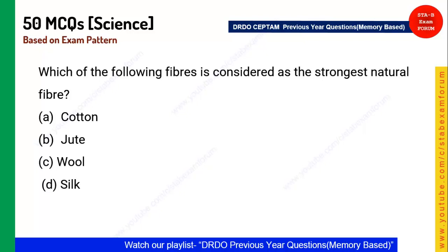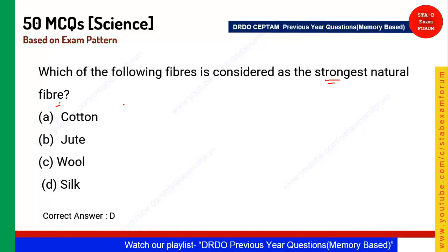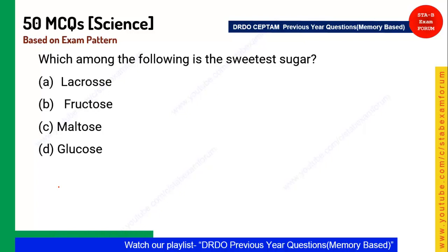Next question: Which fiber is considered the strongest natural fiber? Nature provides the strongest natural fiber in the form of silk, which is made from the silkworm. Wool, jute, and cotton are also natural fibers, but silk is the strongest.